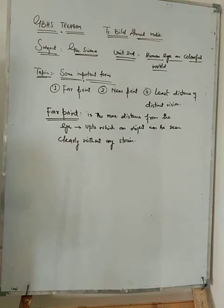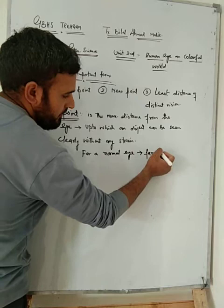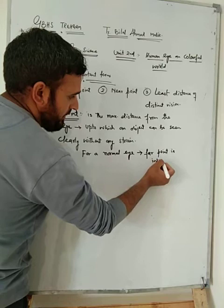Now, for a normal eye, the far point is infinity. Far point is infinity.